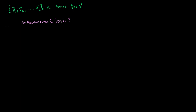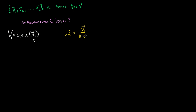Let's think about simple cases. Let's say I just have a one-dimensional subspace — let's call that V1. It's the span of just the vector v1, and v1 is the basis for V1. Now if I had this simple case, how could I ensure it's orthonormal? What I could do is define some vector u1 that's essentially equal to v1 divided by the length of v1.